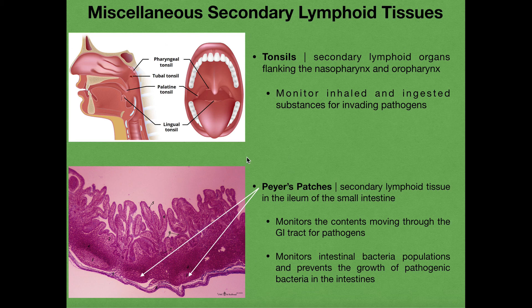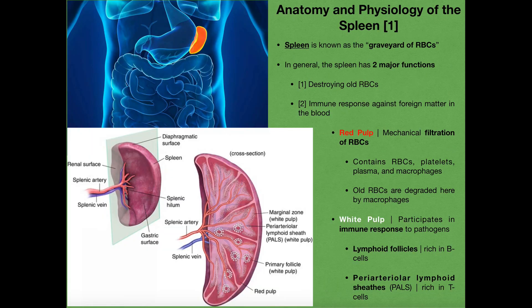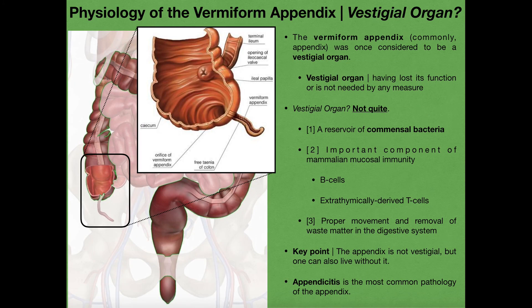To conclude, over the past few videos we've gone over many different secondary lymphoid organs and tissues, and there's a common theme: they house white blood cells and monitor the contents of something for pathogens. Peyer's patches monitor the ileum; tonsils monitor inhaled and ingested substances; the appendix monitors contents moving into the colon; the spleen monitors the blood; and the lymph nodes monitor the lymph. They all have B cells and T cells waiting to detect a foreign pathogen and mount an immune response. Please make sure to like this video and subscribe to the channel for future videos and notifications. Thank you very much.